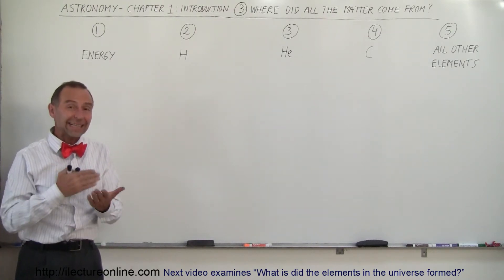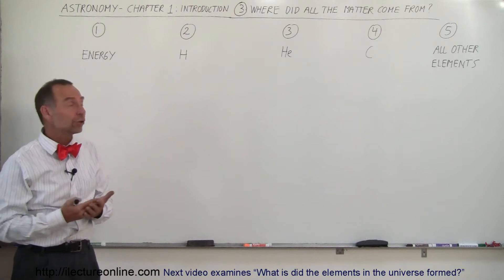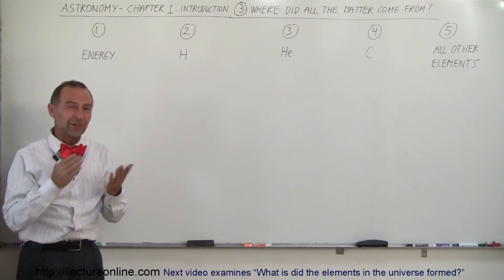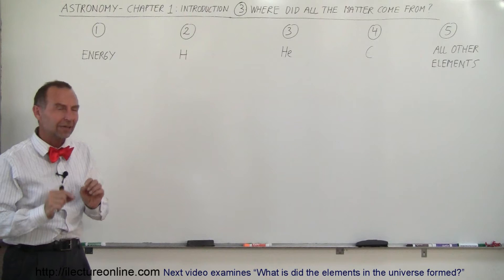In the previous video we saw that 99% of all the visible matter in the universe is either hydrogen or helium: 75% hydrogen, about 25% helium, a little bit less.